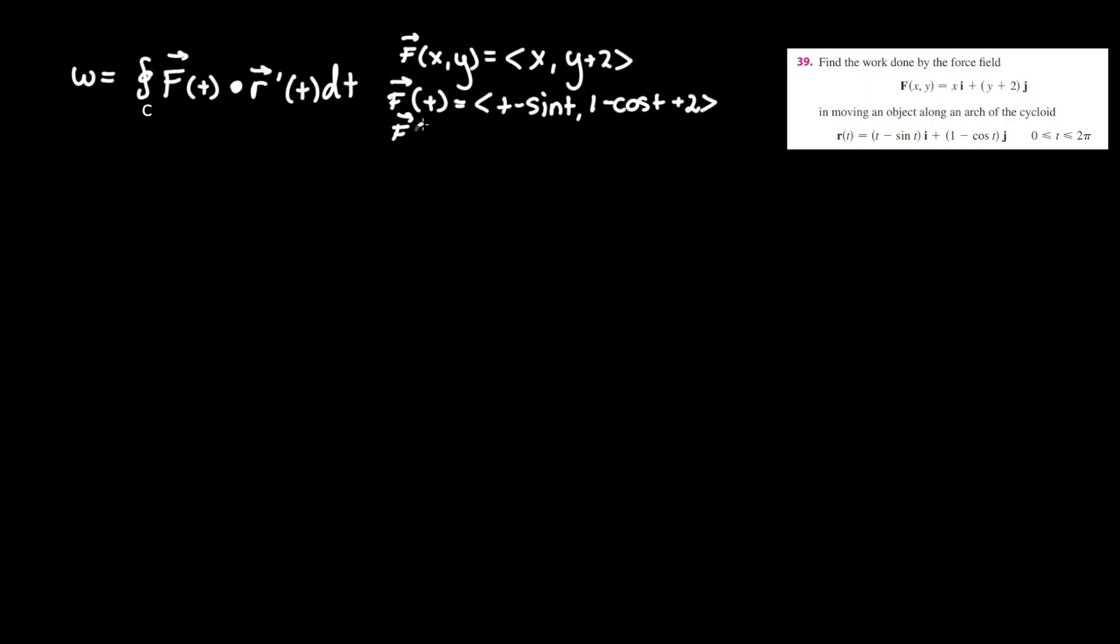And simplifying this one more step we get f of t equals t minus sine t that stays the same for the i component. However we can see there's a 1 plus 2 so we can simplify that to 3 minus cosine t. So now we have our f vector of t settled.